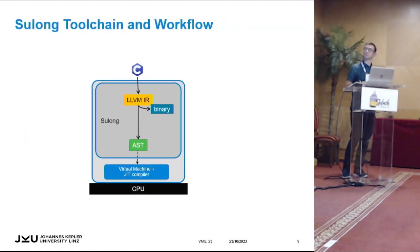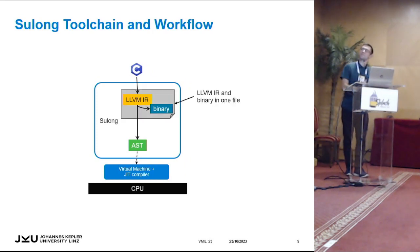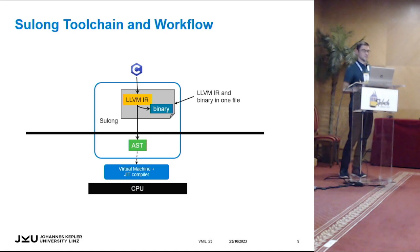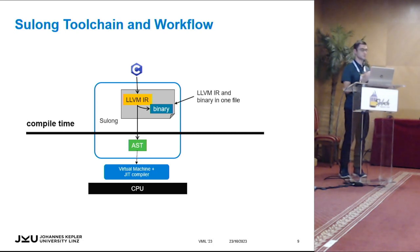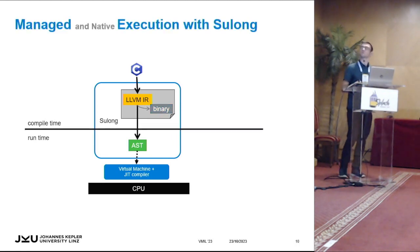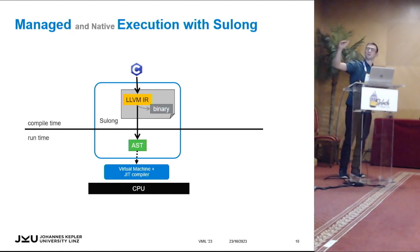Sulong comes with its own toolchain — the Sulong toolchain — which ships binary code and LLVM IR together in one file. Everything above a certain line happens at compile time: the Sulong toolchain creates the LLVM IR and binary ahead of time. Building the abstract syntax tree and using the GraalVM JIT compiler happens at runtime. This is what we call managed execution with Sulong.